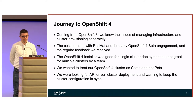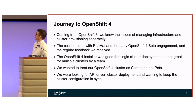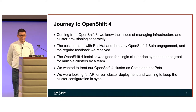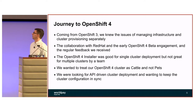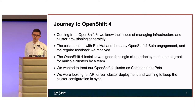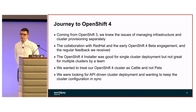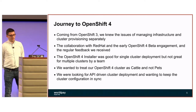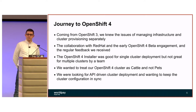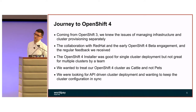OpenShift 4 was great for us. It addressed some of the issues, but we felt like the installer didn't scale. We knew we wanted to have multiple clusters and, as I said, a small team — so for us that didn't scale. There was something missing and we were looking for something more API-driven: cluster management where we could actually run cattle clusters and not pets anymore, like we did with OpenShift version 3.